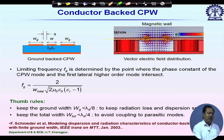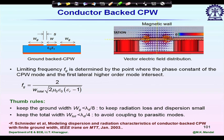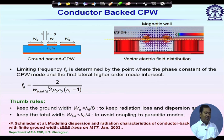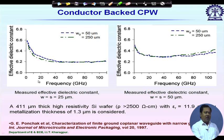In semiconductor fabrication, it is not easy to create periodic vias, so people often use either a conventional CPW line without ground backing, or a ground-backed CPW line without periodic vias. In that case we follow thumb rules to keep surface wave mode generation minimum: keep the ground width w_g less than lambda_d / 8 to keep radiation loss and dispersion small, and keep the total width w_total less than lambda_d / 4 to avoid coupling to parasitic higher order modes. Here lambda_d is the guided wavelength in ground-backed CPW lines.